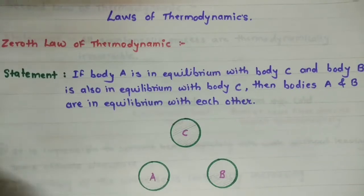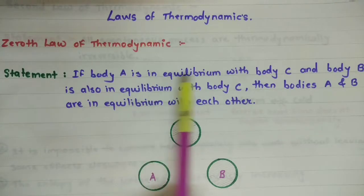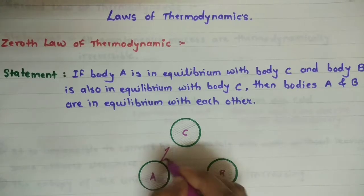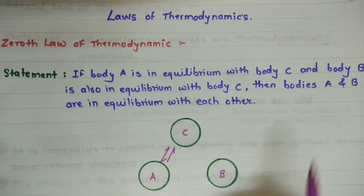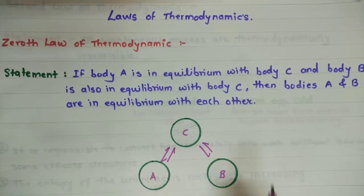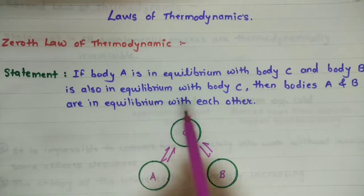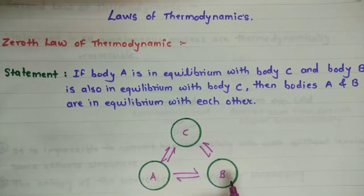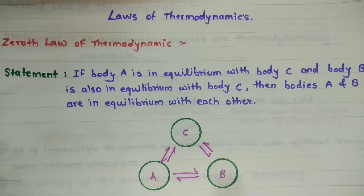What is the exact statement of the zeroth law of thermodynamics? If body A is in equilibrium with body C, and body B is also in equilibrium with body C, then bodies A and B are in equilibrium with each other. From this diagram we can see that if body A is in equilibrium with C, and body B is in equilibrium with body C, then ultimately A and B are in equilibrium with each other.